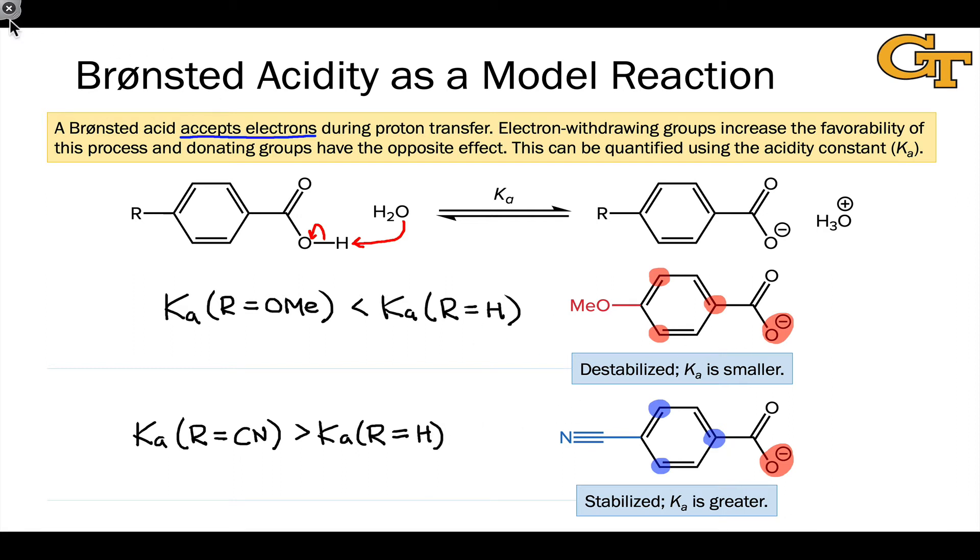And so really quickly before we leave this slide, let's just generalize the conclusion. Because this is going to generalize to absolutely any donating or withdrawing group. In fact, this is one way to define a group as electron donating. An electron donating group, by definition, is going to decrease the Ka value of a para-substituted benzoic acid, like this.